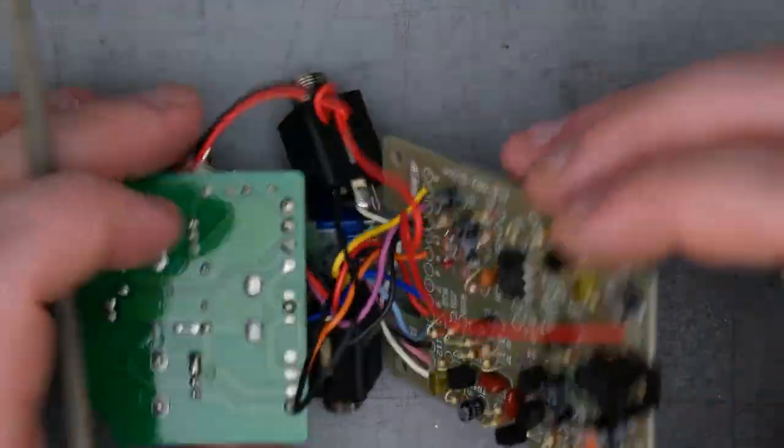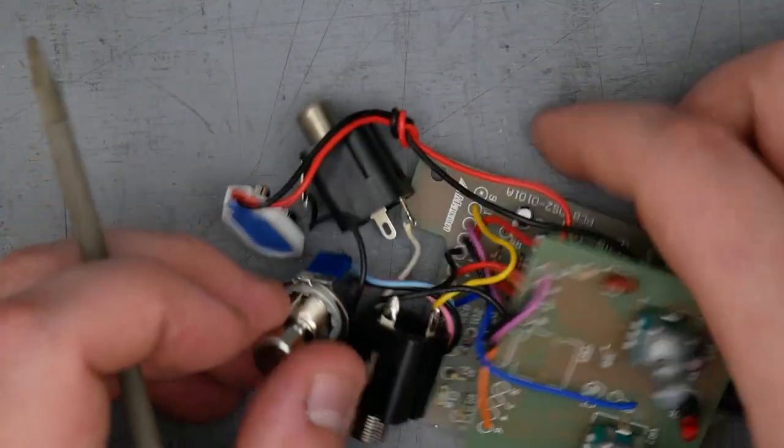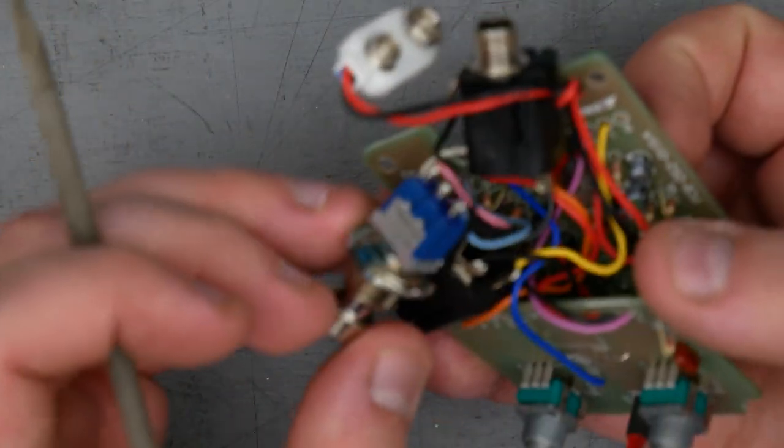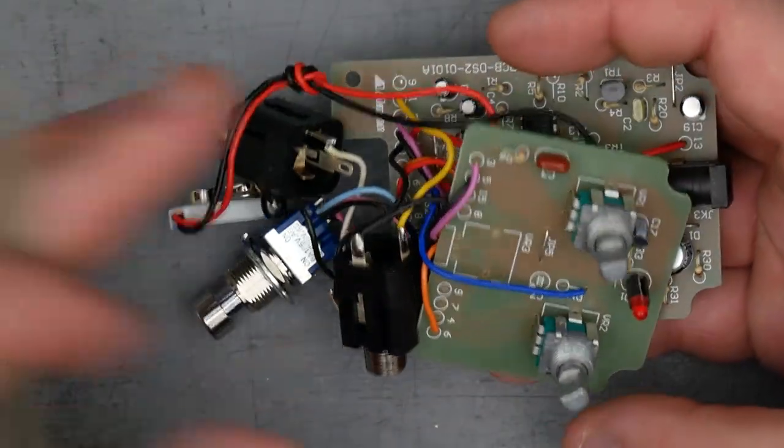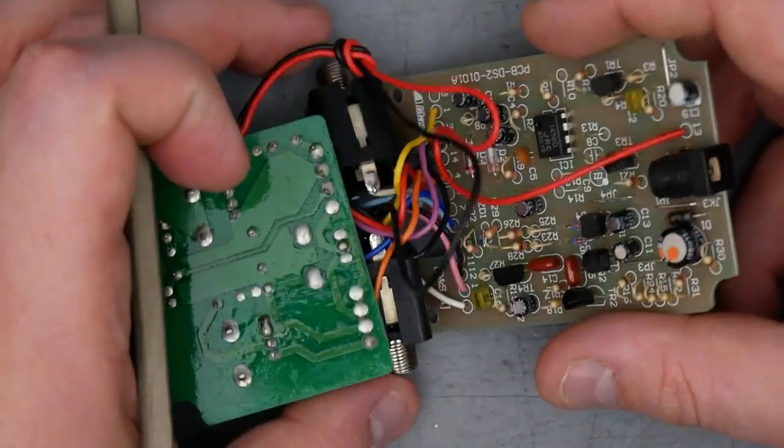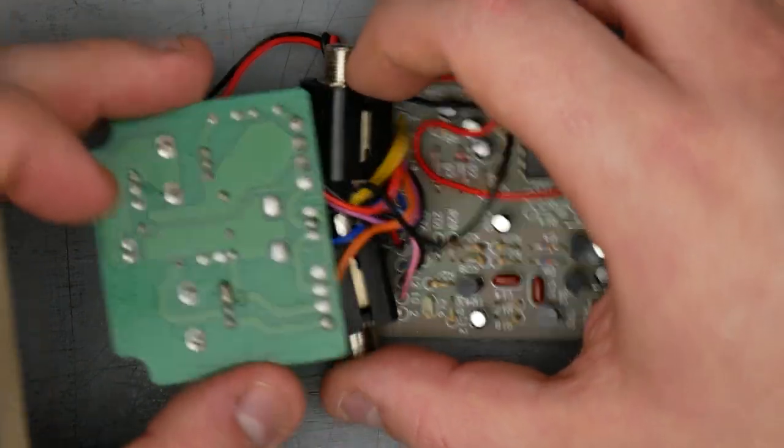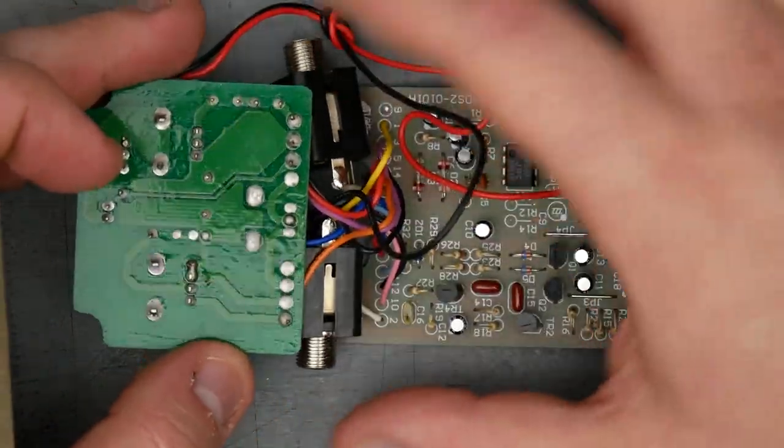As far as off-board components, the foot switch is a pretty standard single-pole double-throw, nice and light, but that pretty much confirms we do have JFET switching. The quarter-inch jacks are enclosed plastic type.